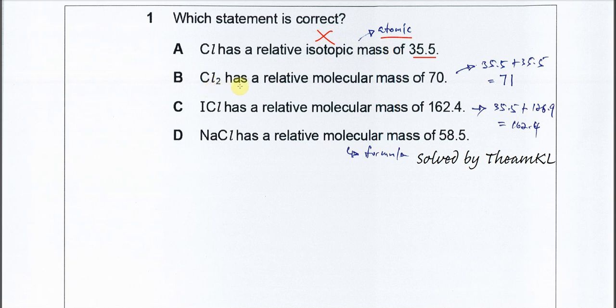Option B: Cl₂ has a relative molecular mass of 70. This one is wrong because for molecular formula we use the relative atomic mass, so 35.5 plus 35.5, it should be 71. So B is also wrong.